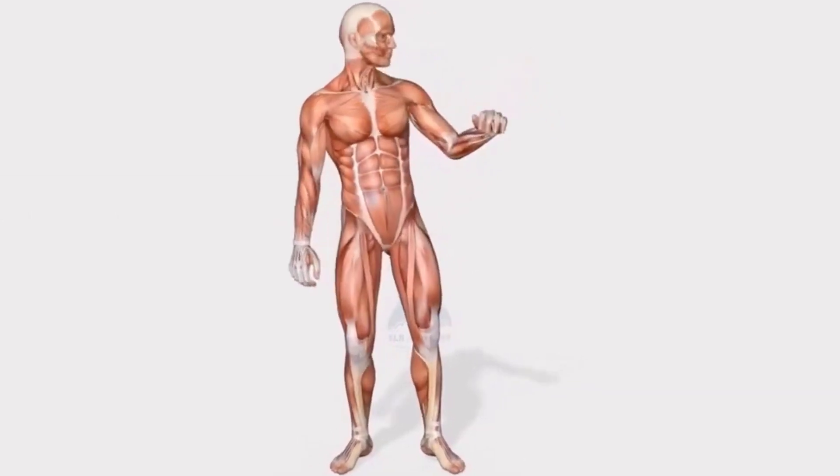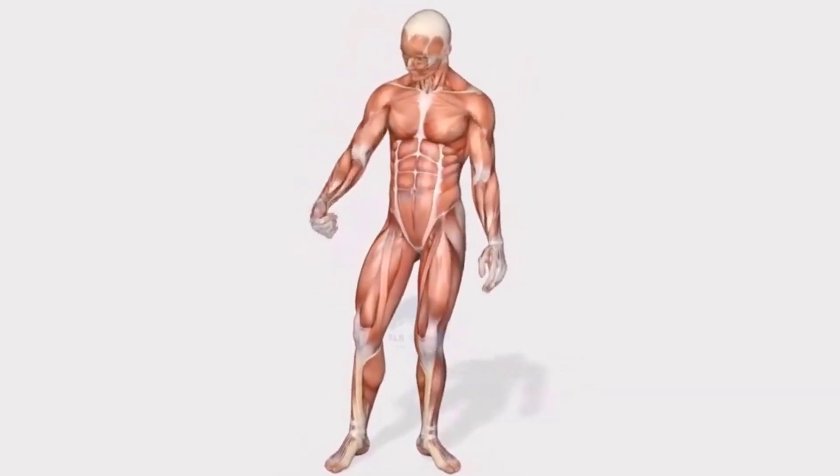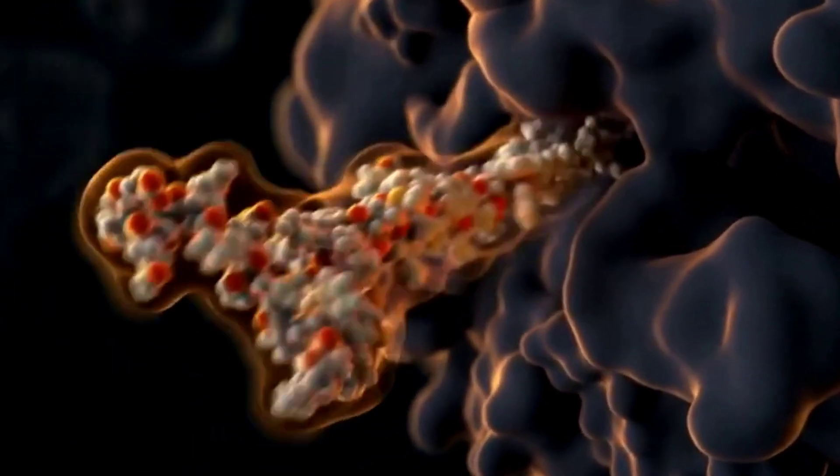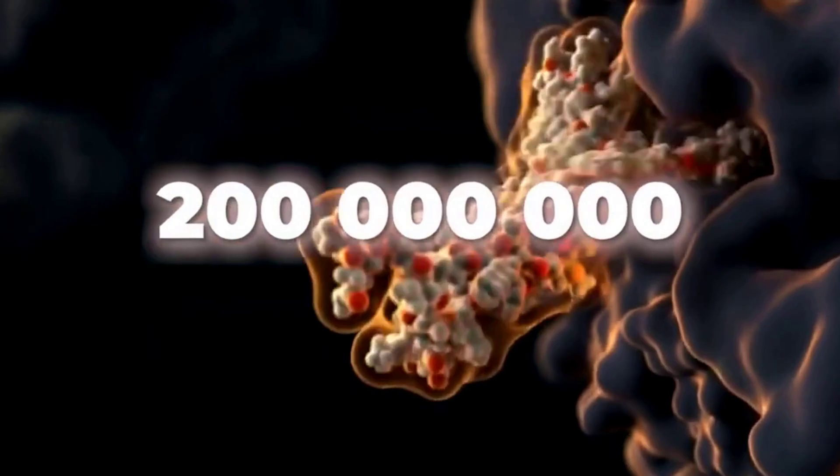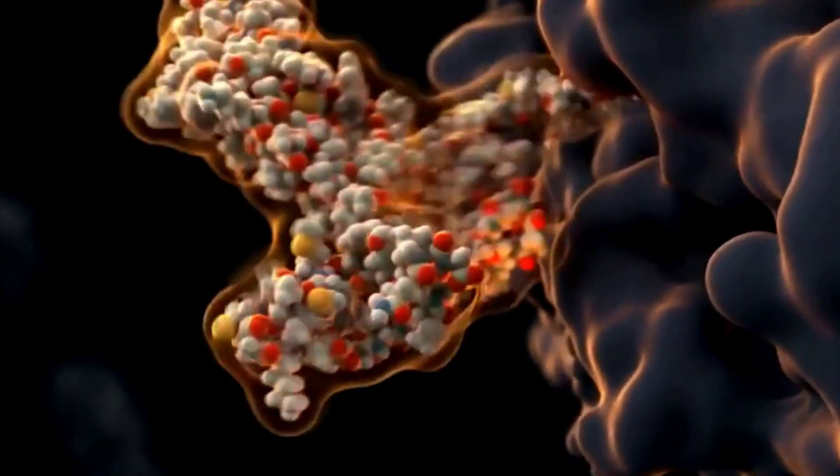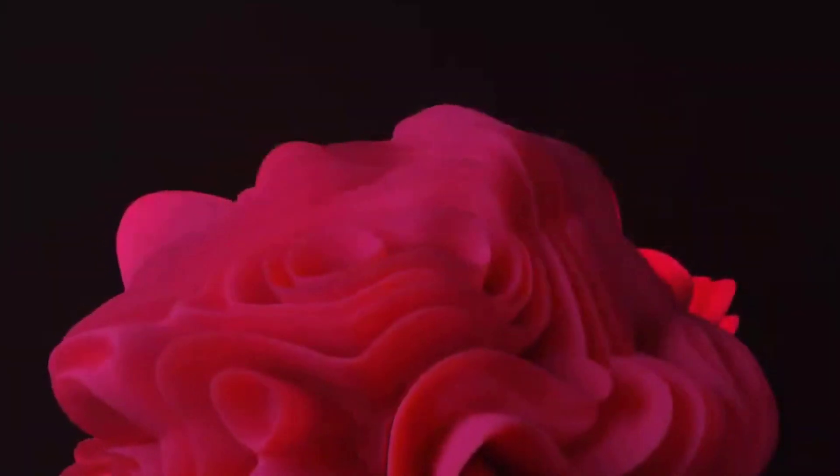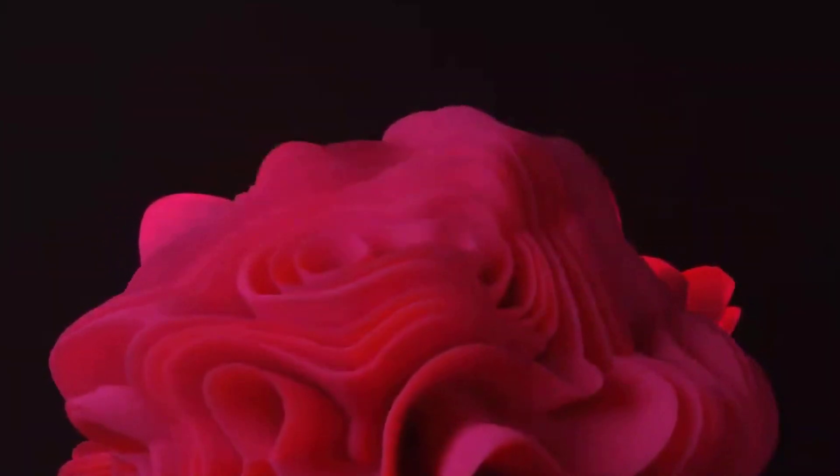It's what allows us to see light, to move, to breathe, and to metabolize the things we eat. Each protein has an intricate shape that defines what it does and how it works. We know of over 200 million proteins, and that number is going up as we discover more. But humans have been pretty bad at understanding the exact 3D shapes of all of these.